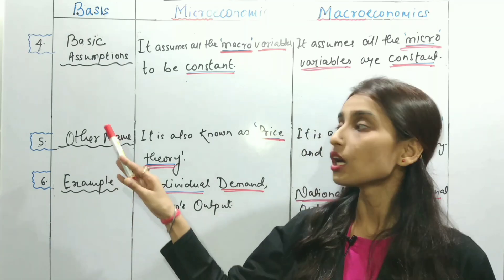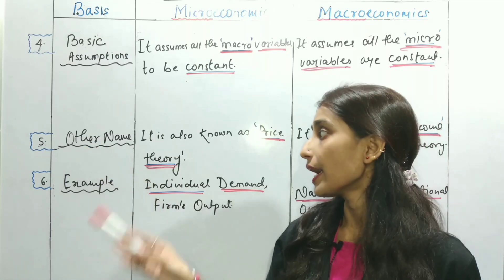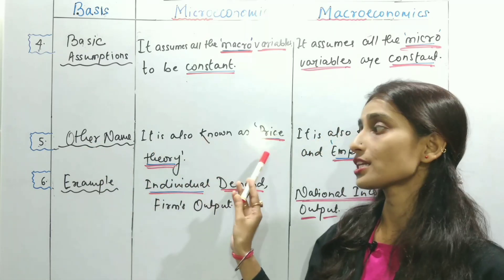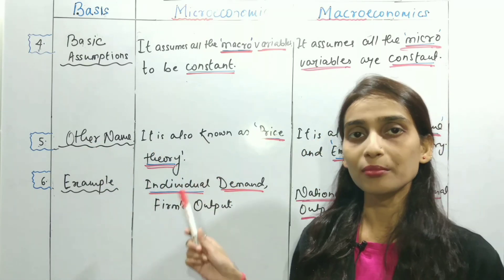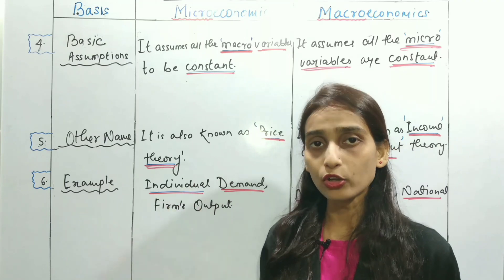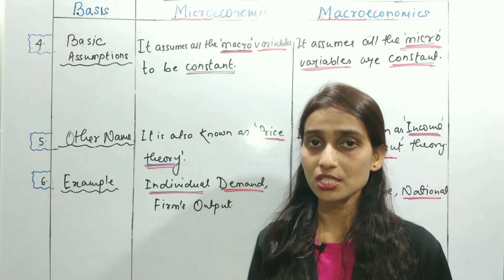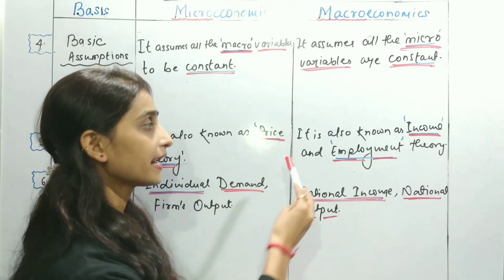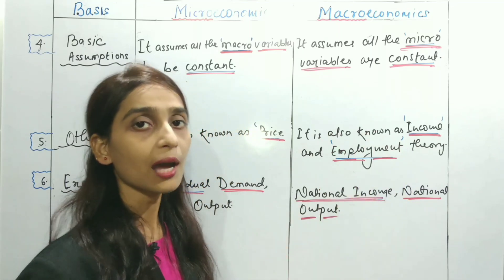The next point is on the basis of other names. Microeconomics is also known as price theory, as we discussed in the previous class. Macroeconomics is also known as income and employment theory.